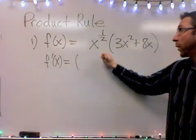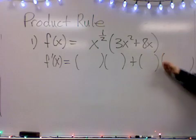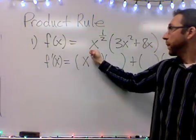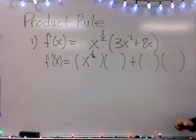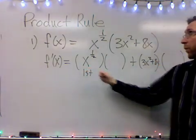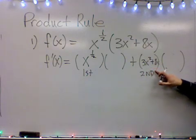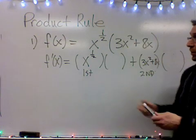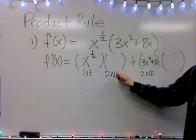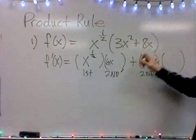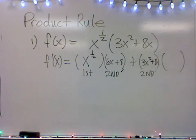With the product rule there are four blanks that you have to fill out. Two of the four blanks are very easy to fill in — that's an easy one to fill in and so is this, because remember in those spots are the first thing and the second factor that appear. To fill in those other missing blanks right there you need to use the power rule. It's the first times the derivative of the second thing, so the derivative of the second thing would just be 6x plus 8, and you get that by using the power rule.